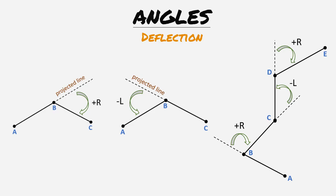Next we will find the deflection angle from line BC to CD. We then project a line from point C in the same manner we did the previous one. Now from this projected line we measure our deflection angle to the left towards line CD.